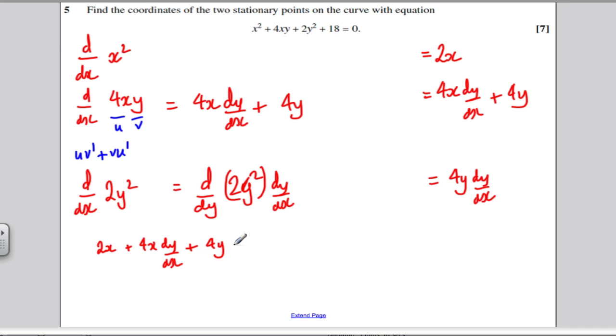And then plus this, plus 4y dy by dx, equals 0.